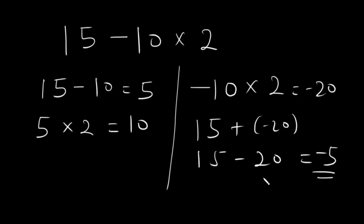Which of these is the correct answer? This is correct and this is wrong. But how do we arrive at the right answer? To solve problems of this nature, it is very important to consider the brackets and precedence rules. These rules are used to remove ambiguity in calculations.